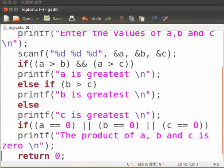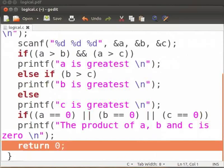Coming to the end of the program, return zero and ending curly bracket. Now, save the program. Save it with extension dot c. I have saved my file as logical dot c.